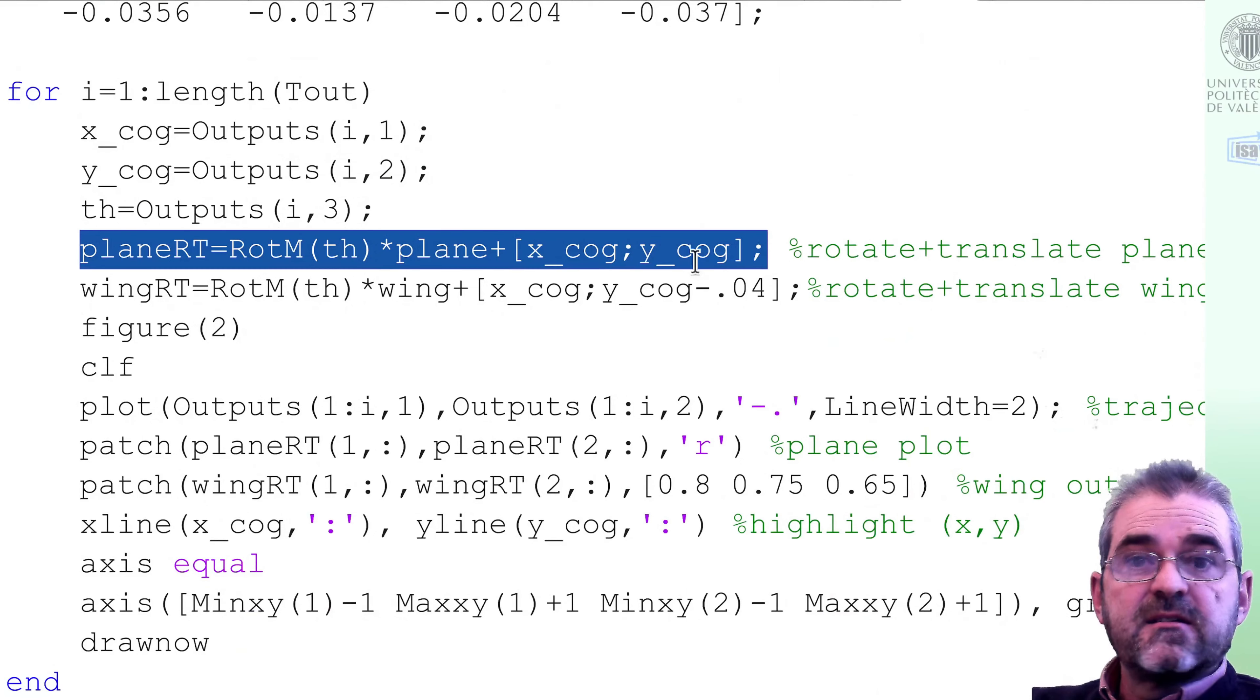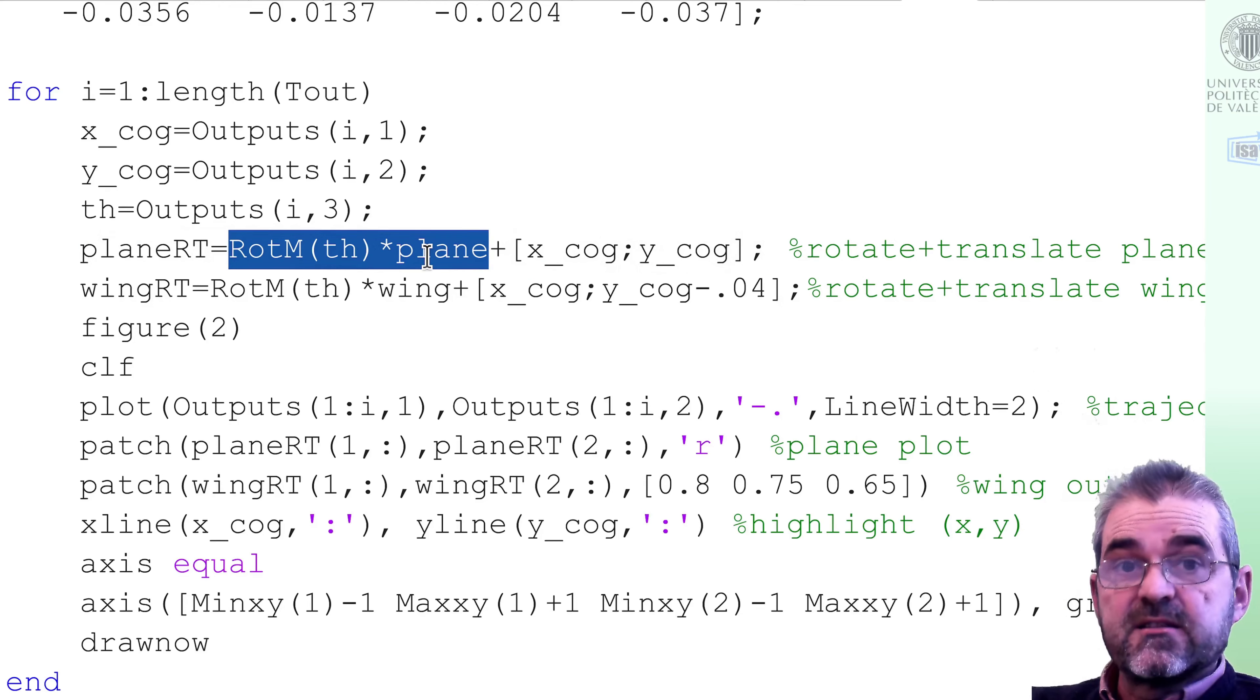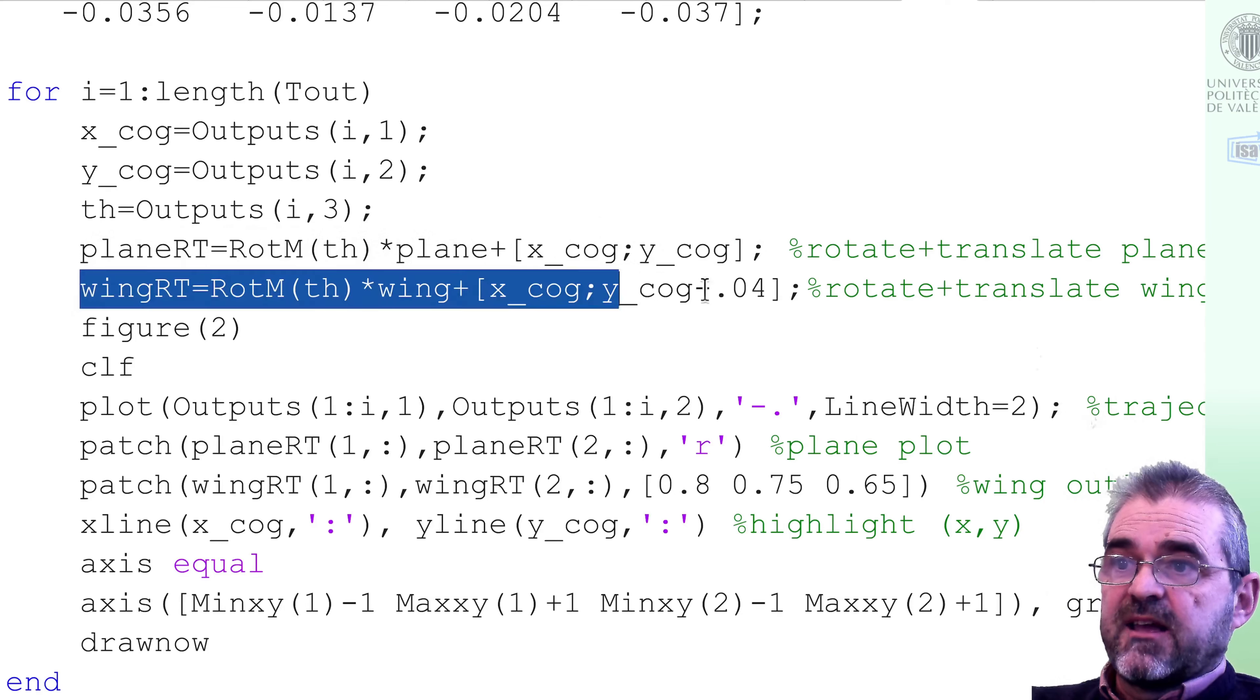This line translates, adding to the positions the center of gravity position, and rotates the plane outline at angle theta. And likewise, translation and rotation of the wing outline so that it's drawn in the correct place and orientation.